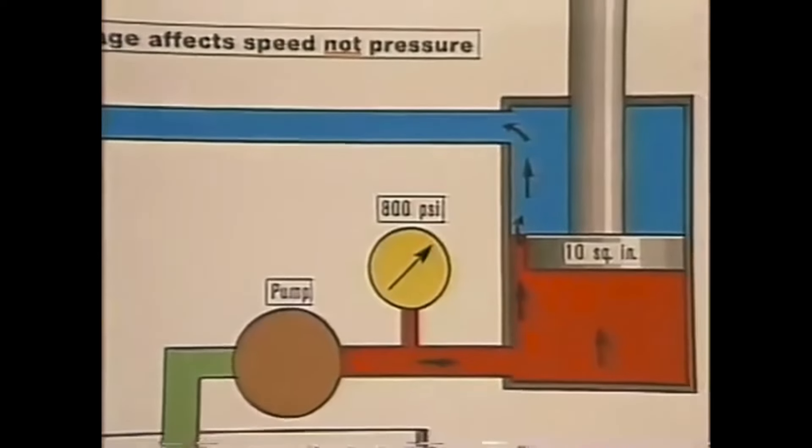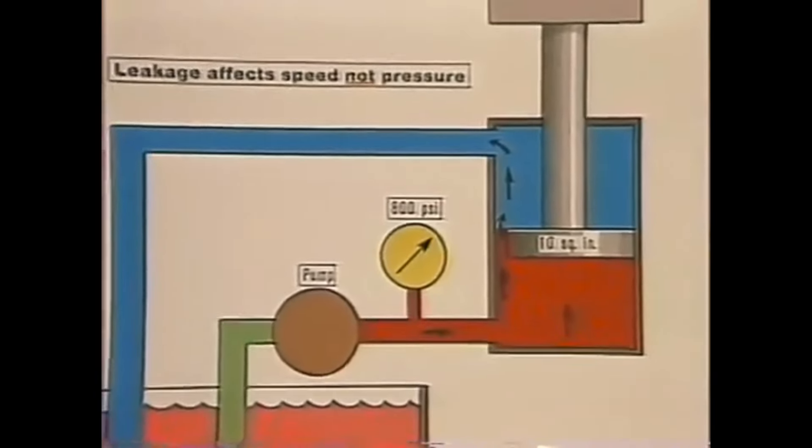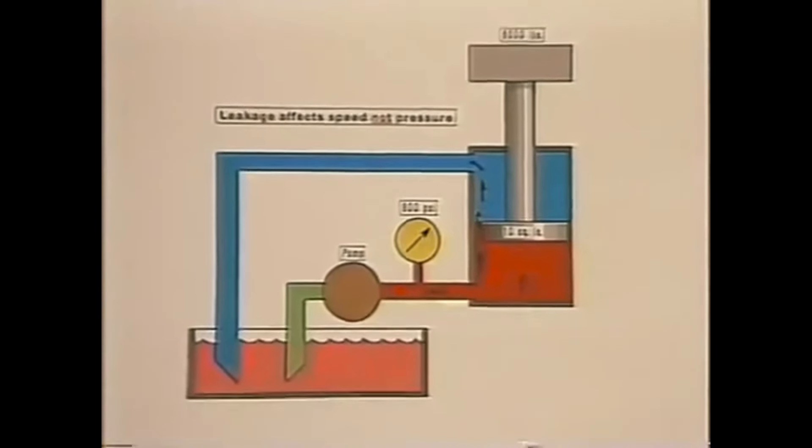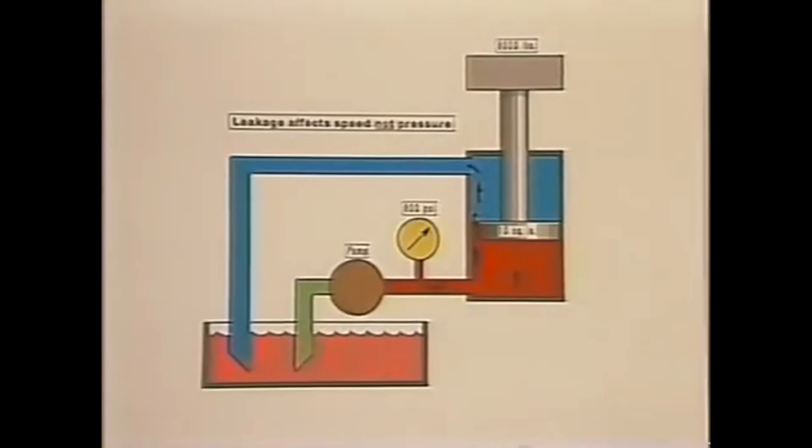If a cylinder stops or even slows down, either you're not putting as much oil into it as you were, or it's leaking past the piston. To check, block the cylinder so it can't move, and remove the opposite line. Be sure it's the opposite line, not the side under pressure, or you'll be sorry.